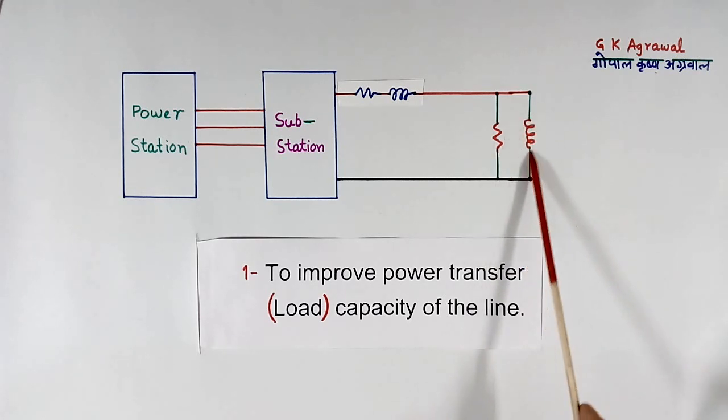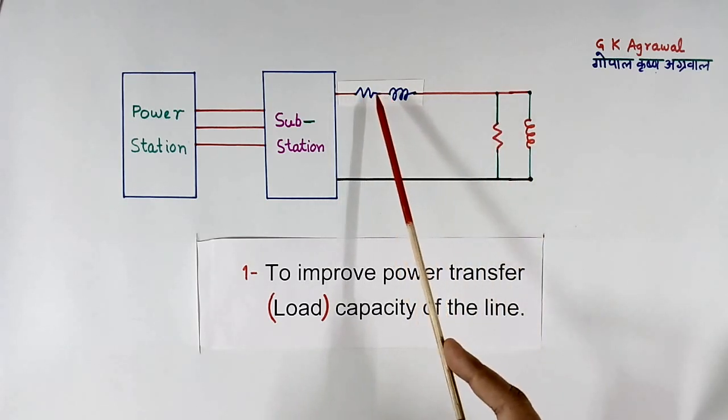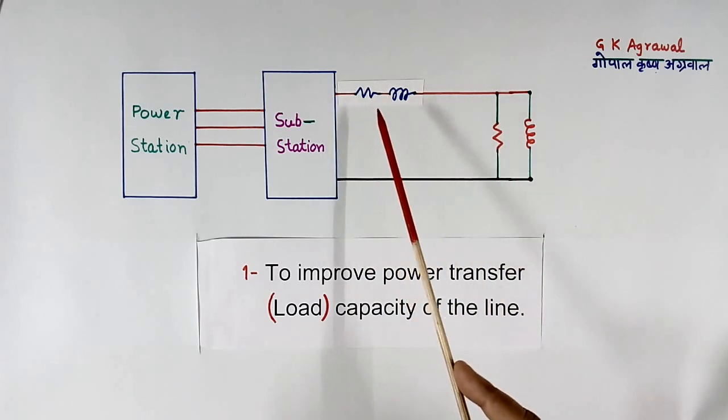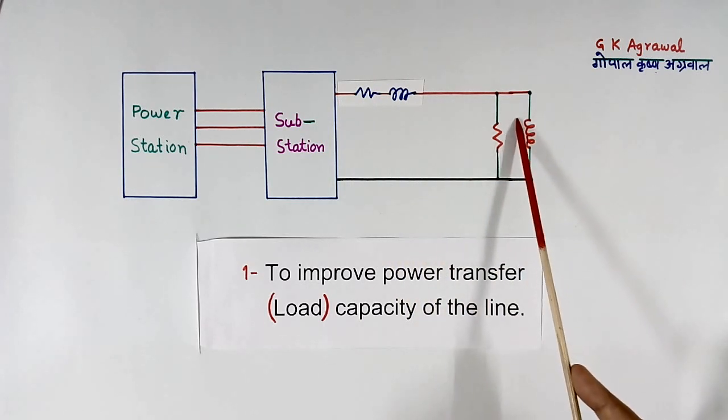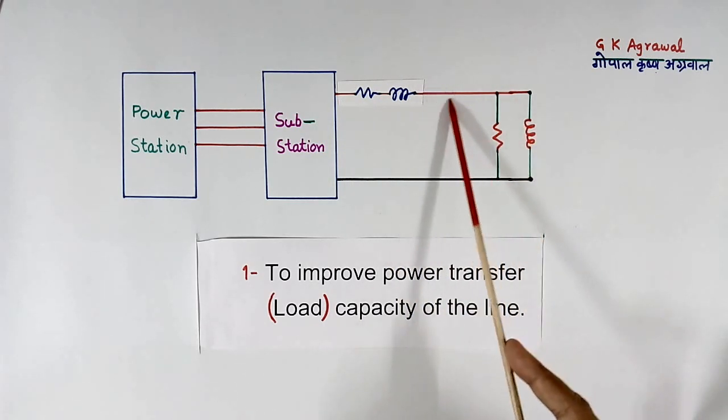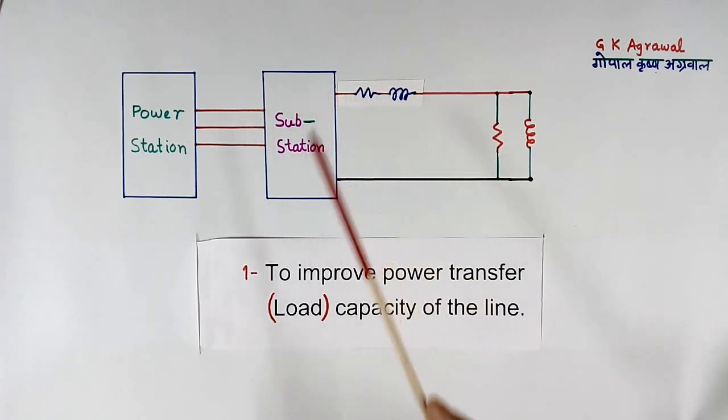Again, current flowing here will flow in this resistance also. This resistance is nothing but the resistance of whole line, so there will be losses. So unnecessary losses also will be there. If we improve the power factor, current in this will reduce, so losses in the line also will reduce.